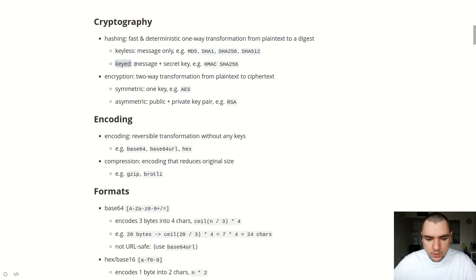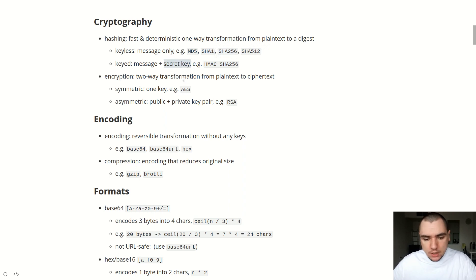The other kind is keyed hash functions. These ones take in a message as well as a secret key. One example would be HMAC SHA-256. The difference between HMAC and plain SHA-256 is that HMAC takes in a secret key, and it's going to produce a vastly different output because the secret key is involved in the process of hashing.